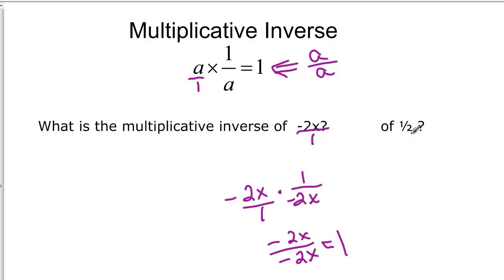So what's the multiplicative inverse of one half? We're going to flip it over. So it's 2 over 1. And if I multiply that by 1 over 2, you can see we get 2 over 2, which is equal to 1.